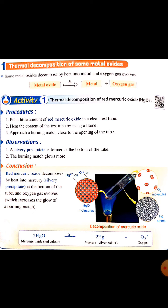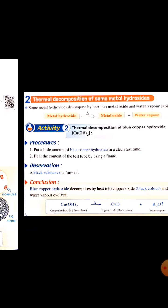Number one: thermal decomposition of some metal oxides. The general rule: a metal oxide, by heat, decomposes into the metal and oxygen gas — which helps in burning. For example, red mercury oxide by heat gives silver mercury, and oxygen gas evolves.